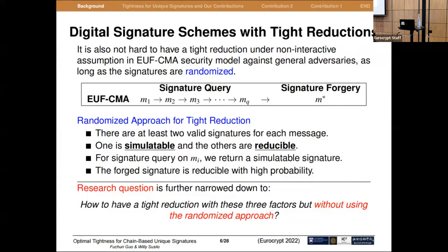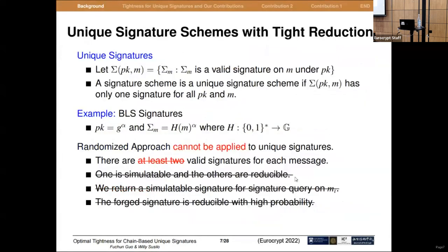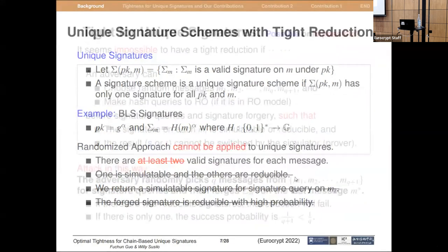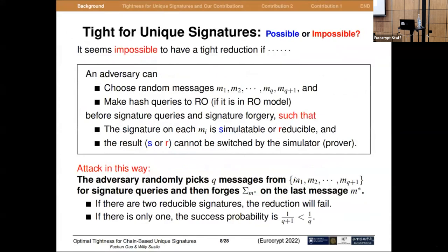The consequent question is how to have a tight reduction with these three factors but without using the randomized approach. This is interesting because unique signatures are special signatures where each message has only one valid signature, such as the well-known BLS signature scheme proposed 20 years ago. The randomized approach cannot be applied to unique signatures because there's only one valid signature for each message. The consequent question is: is it possible to have a tight reduction for a unique signature scheme?